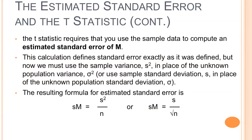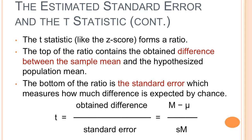The estimated standard error and the t-statistic: the t-statistic requires that you use sample data to compute the estimated standard error, versus the z where we would just use the population standard deviation divided by the square root of the sample size. Here, instead of the population standard deviation, you're going to use your sample standard deviation. You could use either one of the formulas to calculate the estimated standard error. The t-statistic, like the z-score, forms a ratio. The top contains the obtained difference between the sample mean and the hypothesized population mean — there will always be some kind of difference in the numerator. The bottom is the standard error, which measures how much difference is expected by chance.